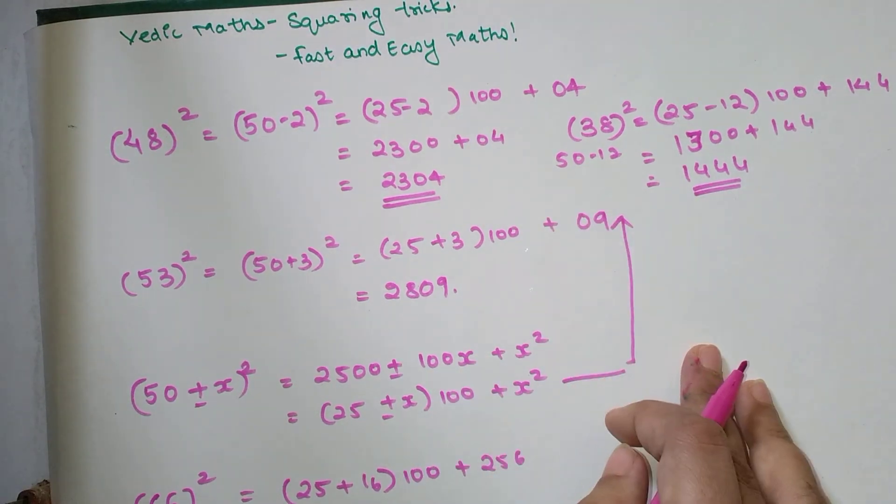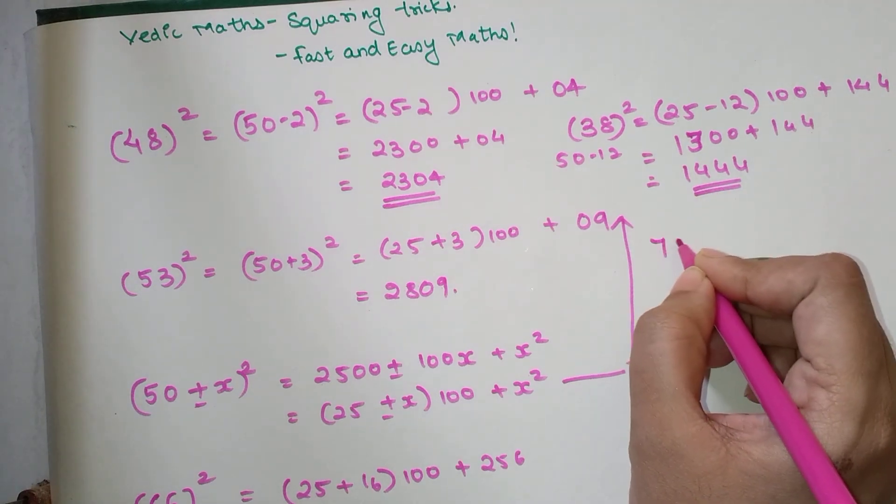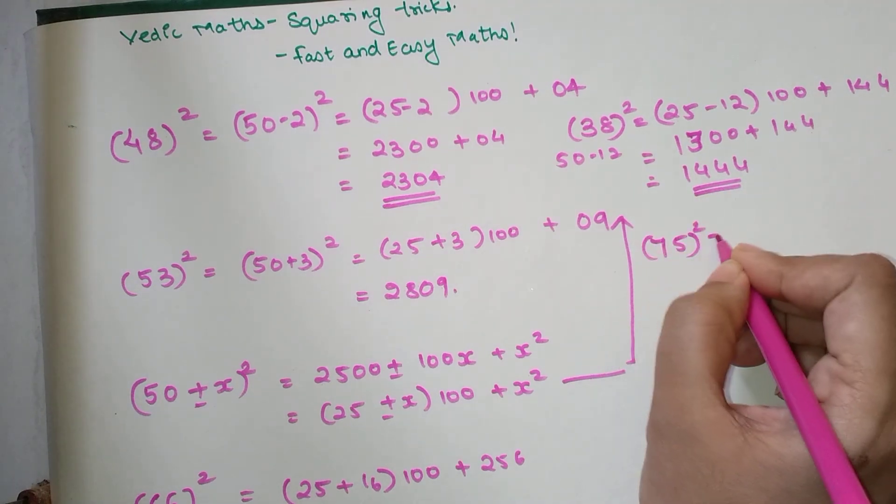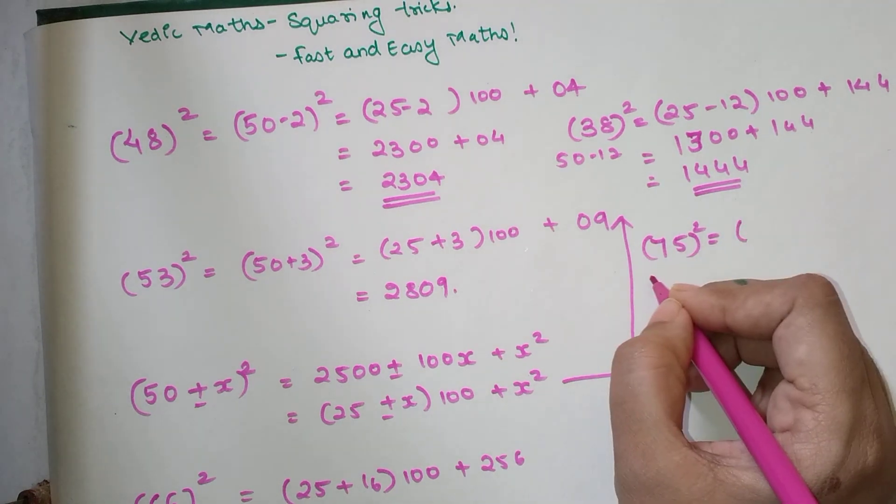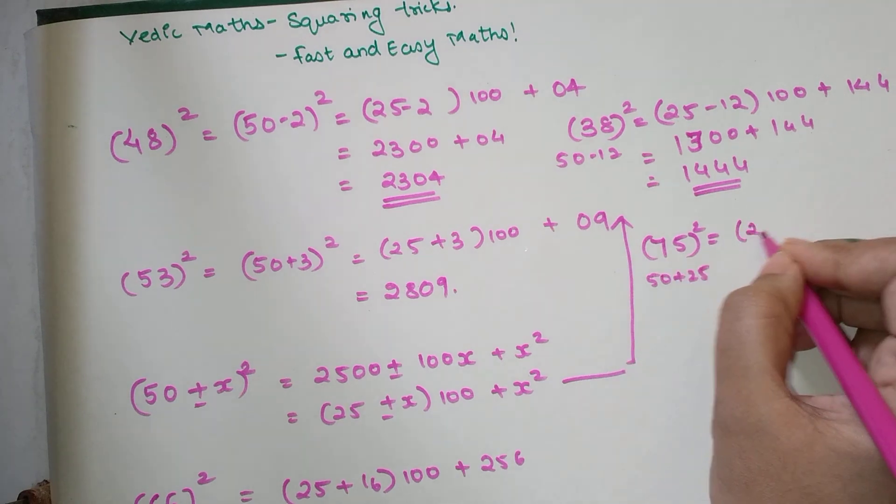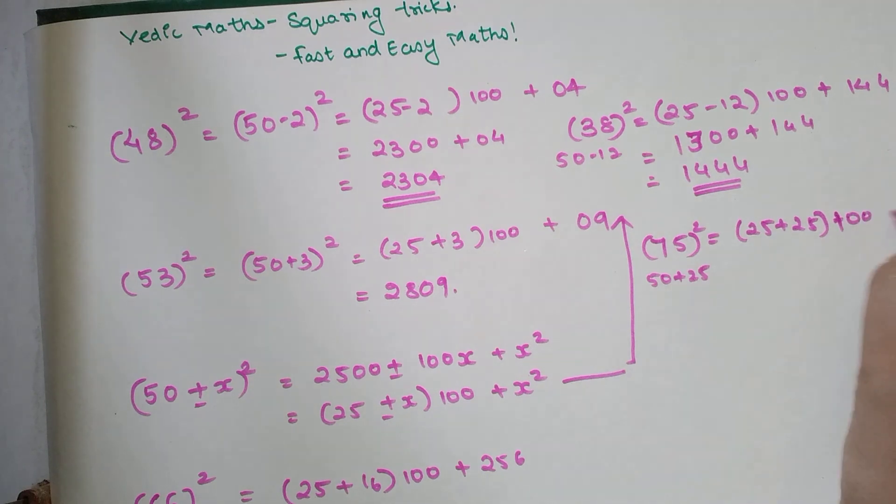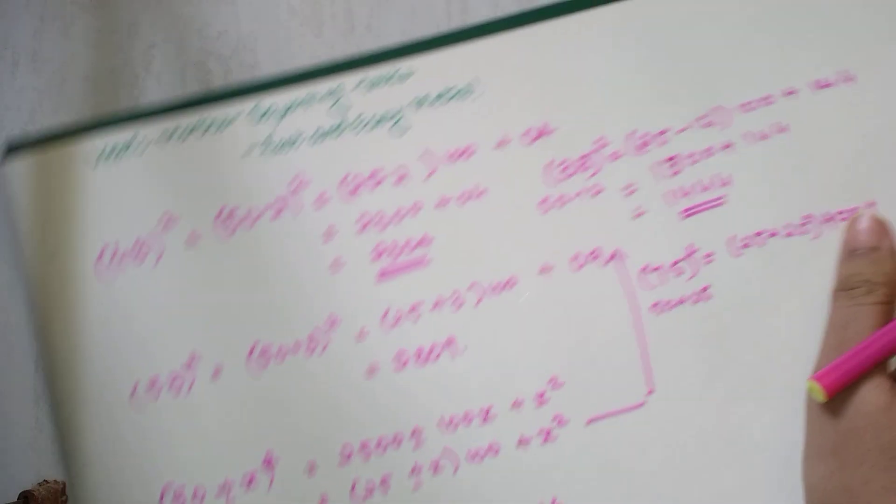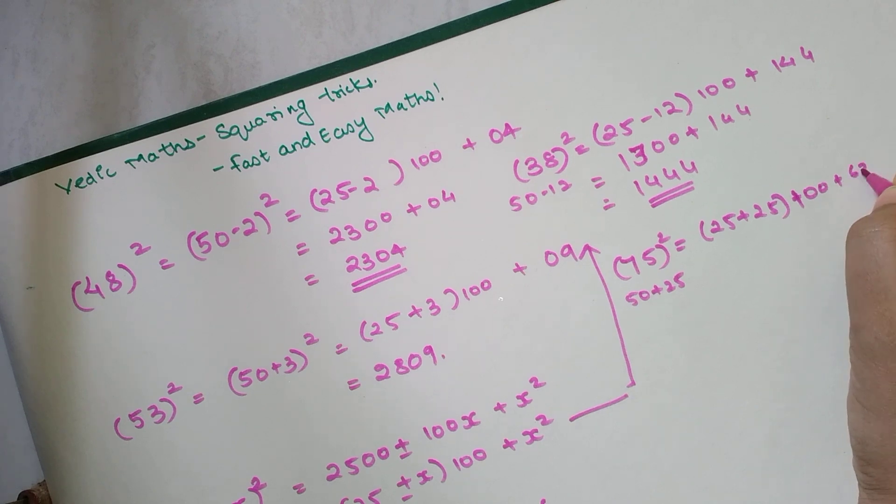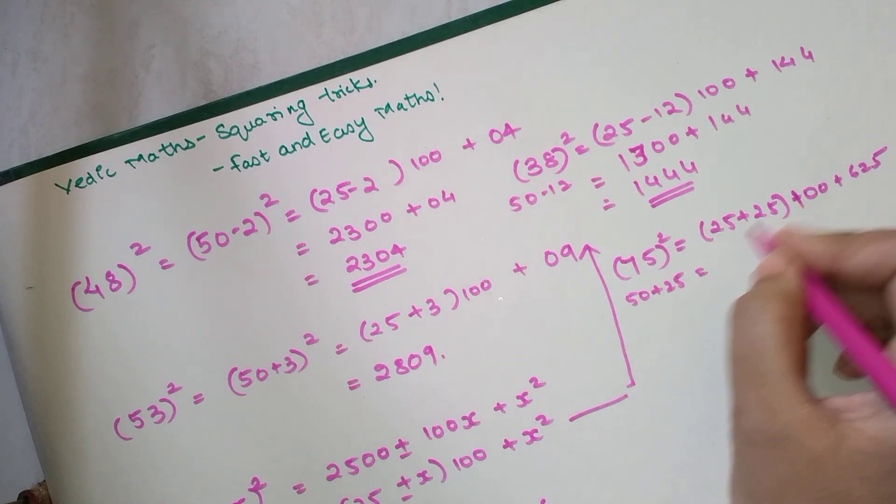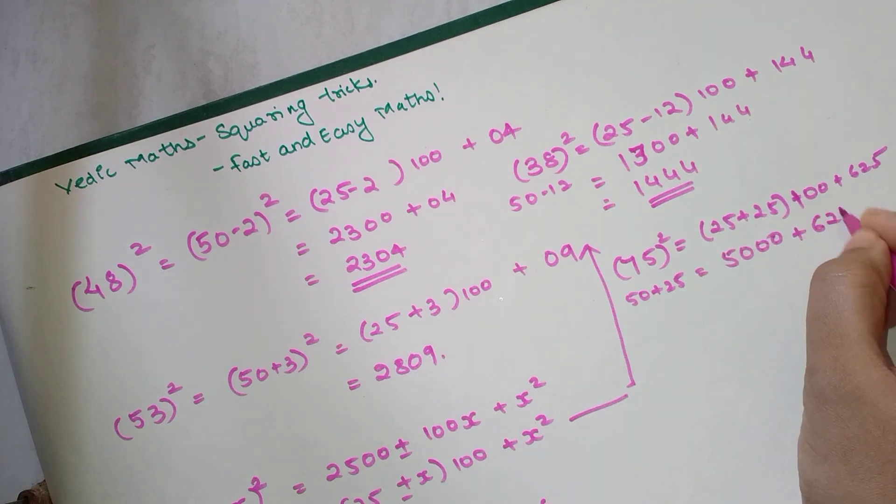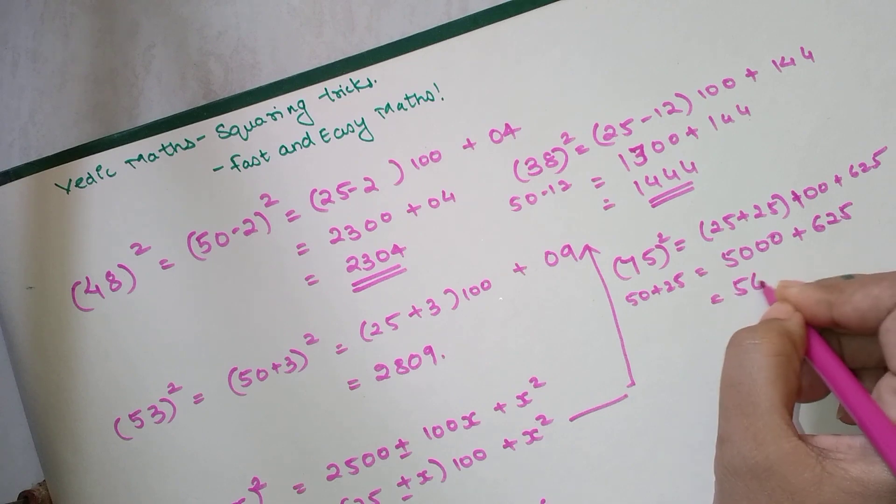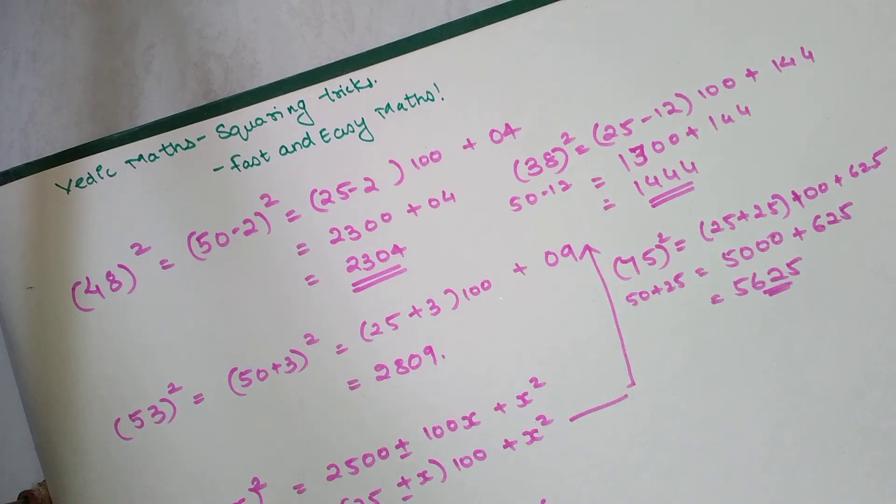Now let's take a bigger example. Let's try to understand 75 square. So again, 50 plus 25 gets you 75. So 25 plus 25 into 100 and what is my 25 square is nothing but 625. So my answer is 50 into 100, that is 5000 plus 625. So my answer is 5625. Pretty cool, right?